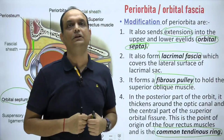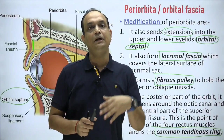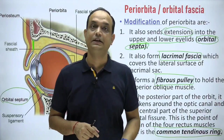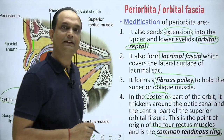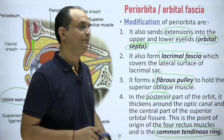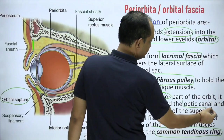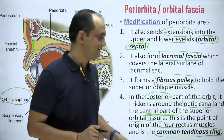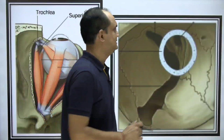The trochlear space is a depression on the medial side of the roof of orbit, having a small fibrocartilaginous pulley formed by the modification of periorbita. The last modification is the common tendinous ring of Zinn. In the posterior part of the orbit, near the apex, there is a thickening around the optic canal and the central part of the superior orbital fissure. This ring of Zinn encloses two structures: the optic canal and the central portion of the superior orbital fissure.